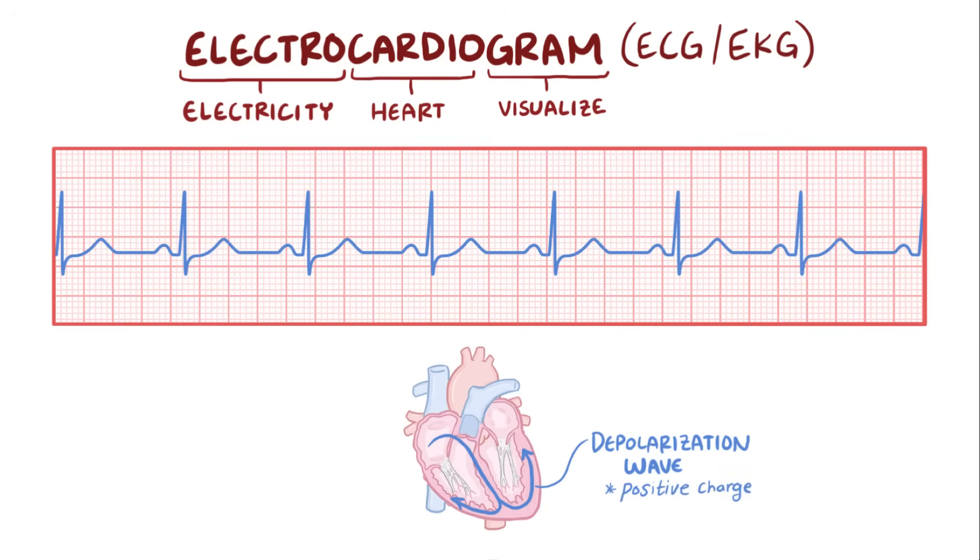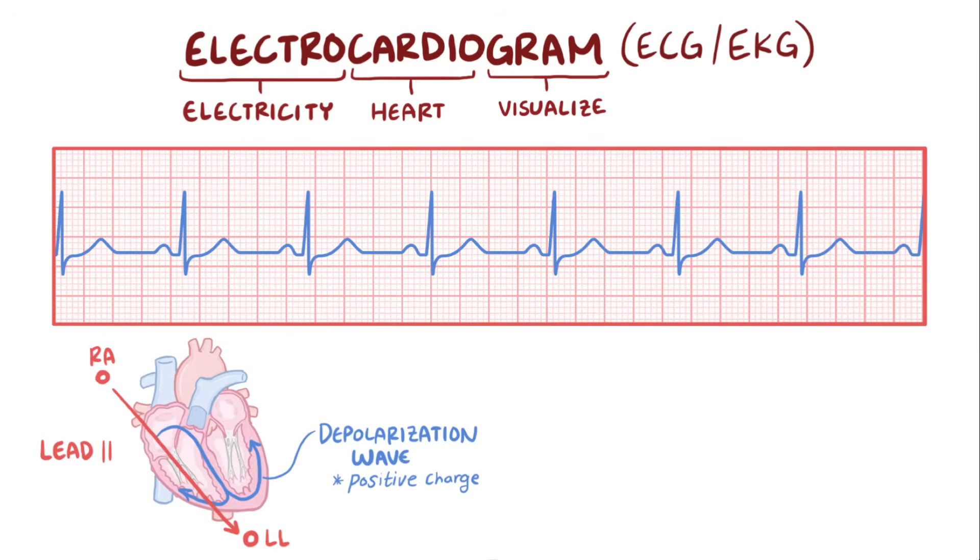And the way it looks depends on the set of electrodes you're using. This particular set of electrodes is called lead 2, for example, with one electrode on the right arm and the other on the left leg. So essentially when the wave's moving toward the left leg electrode, you get a positive deflection, like this big positive deflection corresponding to the wave moving down into the left and right ventricles.